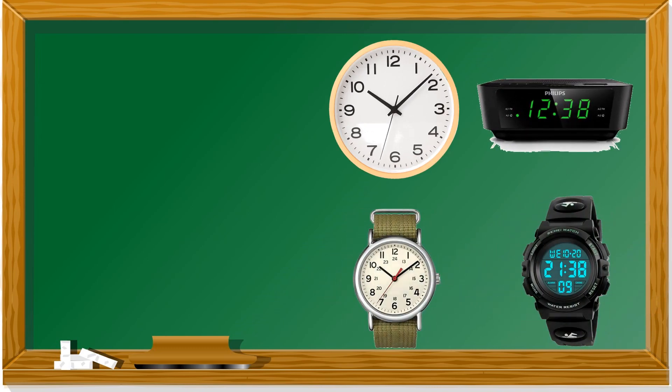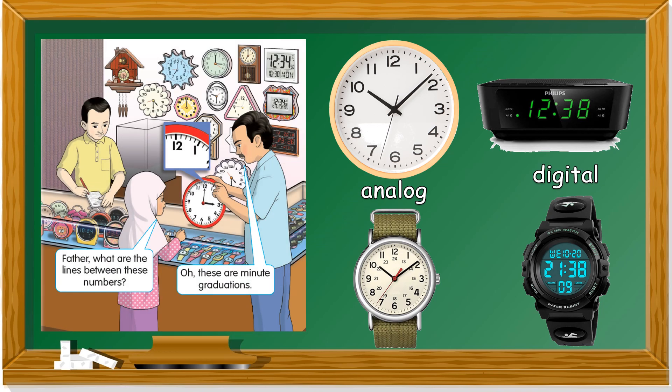Let's recap what we have learned from the previous lesson. There are two types of clocks and watches — one is analog and the other is digital. We have learned that the lines on analog clocks and watches are called graduations.